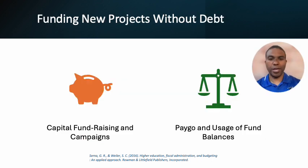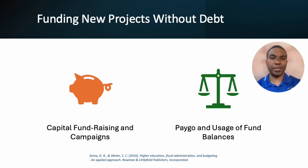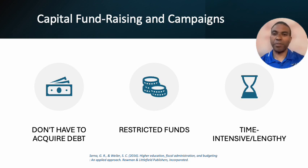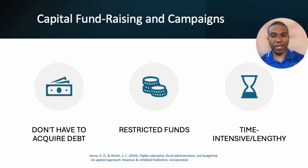If you're going to fund new projects without debt, you're probably going to do it through a capital fundraising campaign, or you're going to pay as you go and use your available fund balances. Through capital fundraising campaigns, the advantage is you don't have to go out and get debt. The disadvantage is that funds are usually restricted — maybe for scholarships or to build a specific building.